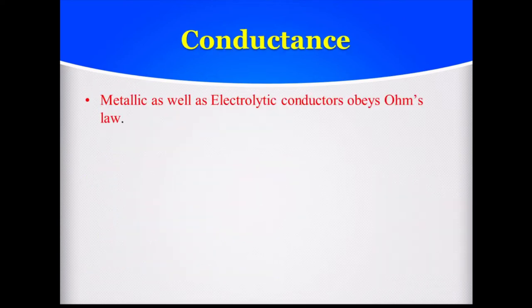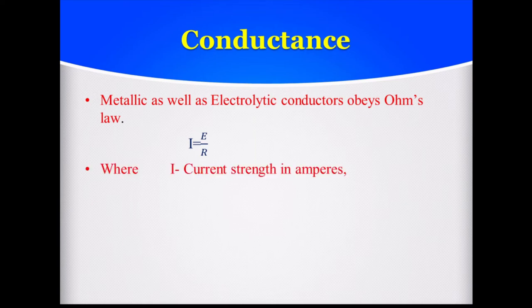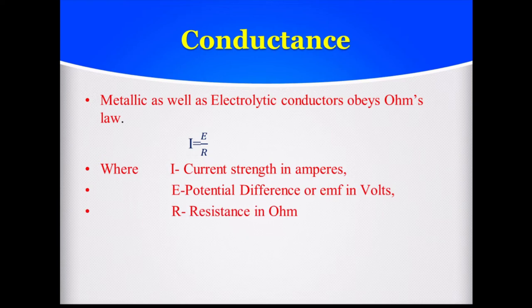Now, conductance — you are already familiar from the last lecture that the material which conducts electricity is called a conductor. Metallic as well as electrolytic conductors obey Ohm's law. Ohm's law states: I = E / R, where I is the current strength in ampere, E is the potential difference or EMF in volts, and R is the resistance in Ohm.